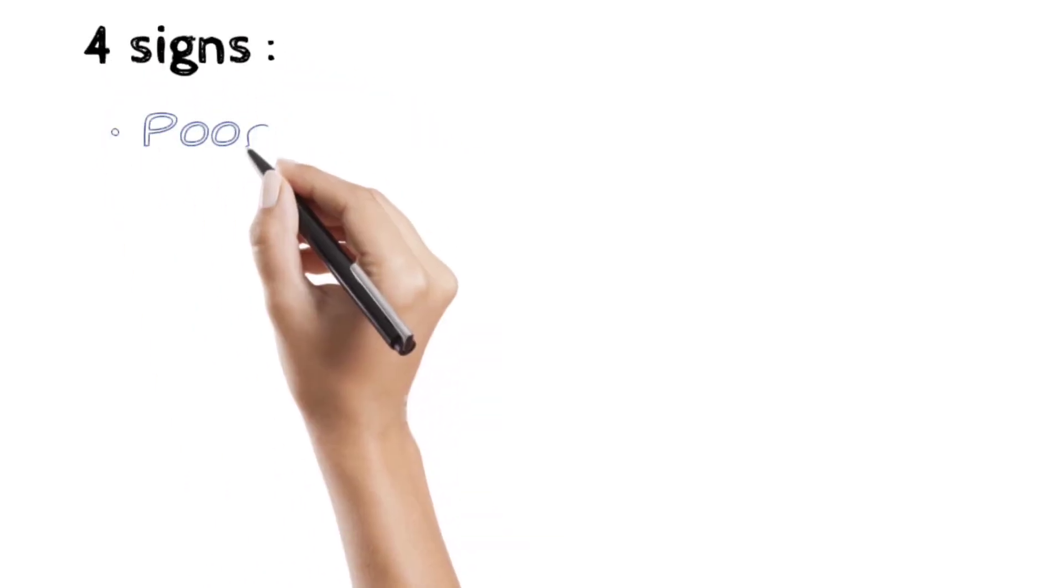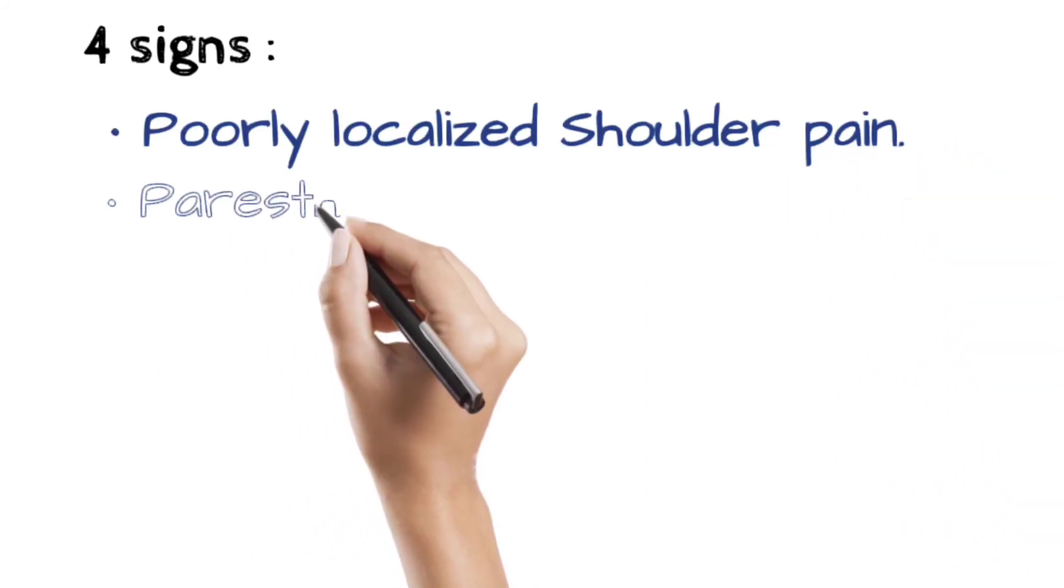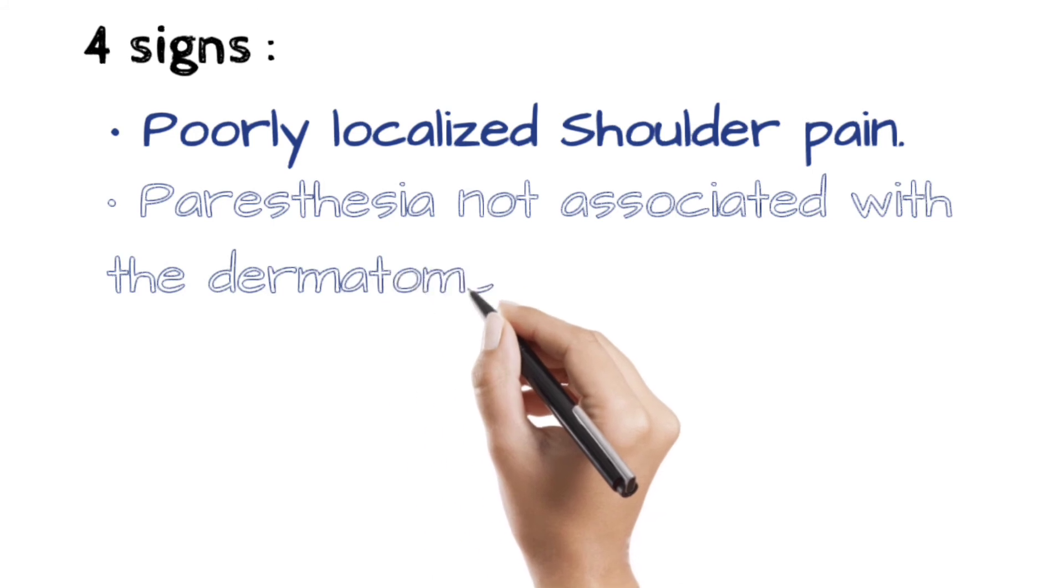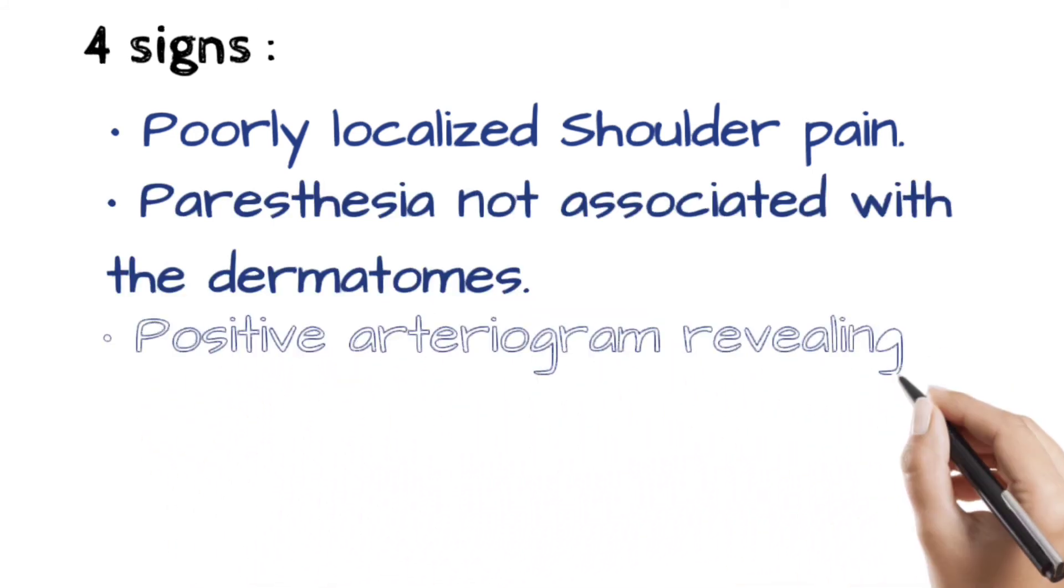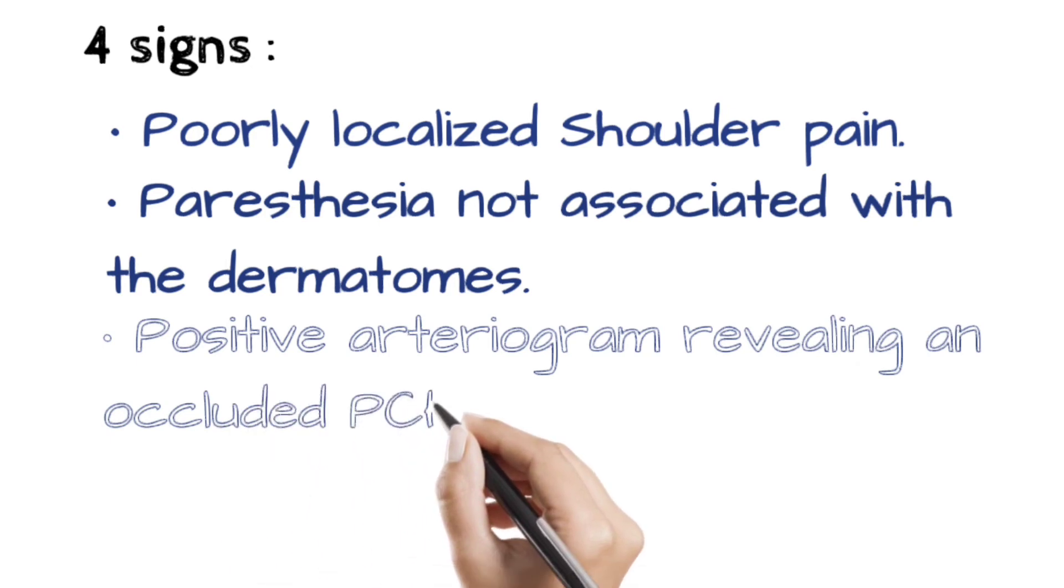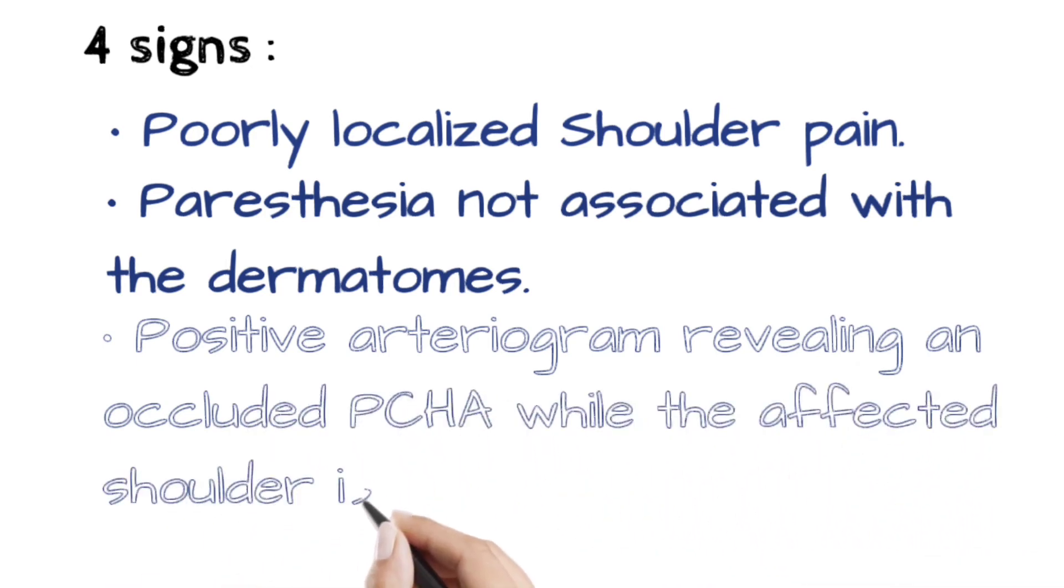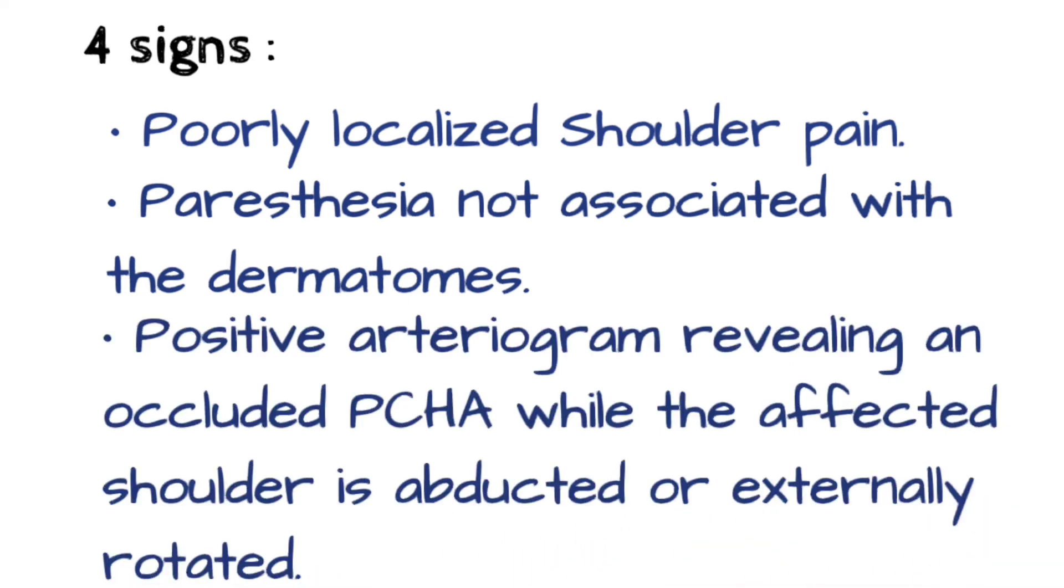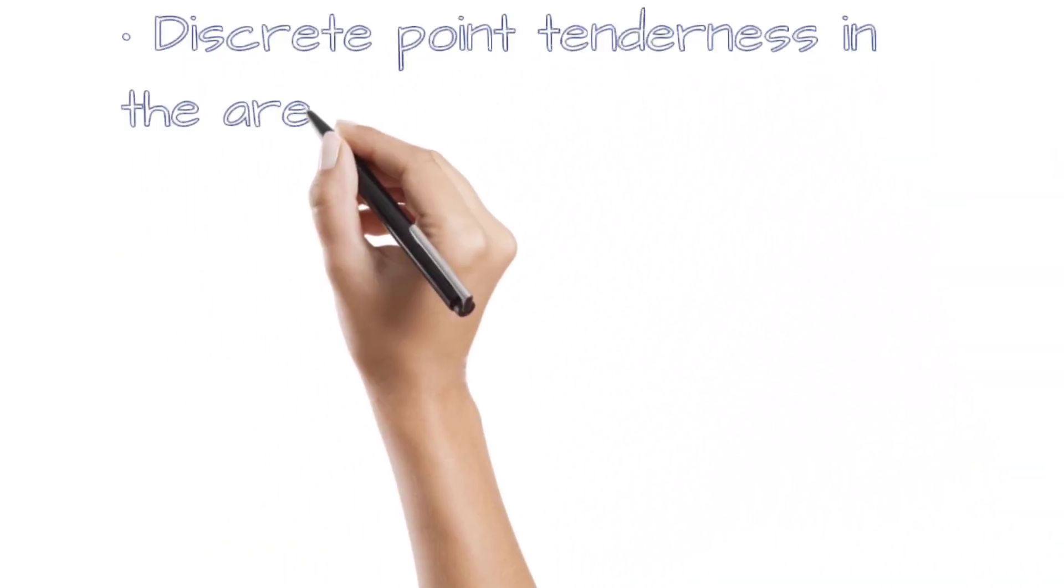Four main signs that are associated with QSS are: poorly localized shoulder pain, paresthesia not associated with the dermatomes, positive arteriogram revealing an occluded PCHA (posterior circumflex humeral artery) while the affected shoulder is abducted or externally rotated, and discrete point tenderness in the area of the quadrangular space.